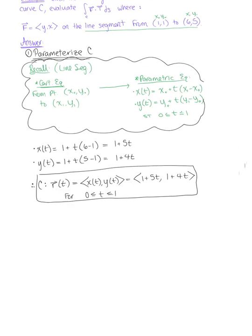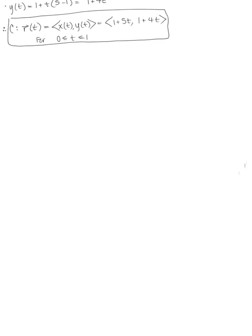So we'll now use this parametric equation to find the tangent vector and rewrite the vector field. Step 2, let's find the tangent vector. Using our parameterization, we can see that vector r'(t) is defined as the vector ⟨5, 4⟩.